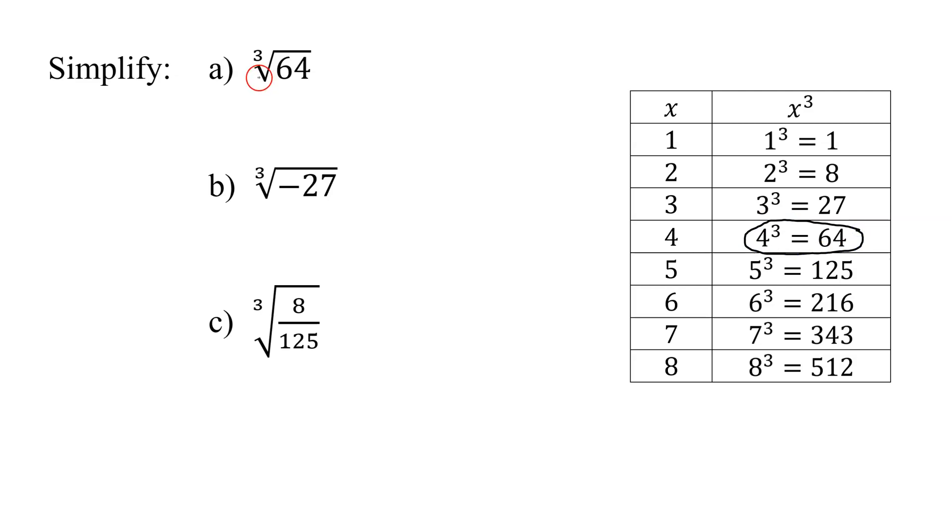So remember, what do I mean by a cube root of 64? 64 is what number multiplied by itself three times gives me 64. And what's the answer? 4. So the cube root of 64 is 4. Double check it. 4 times 4 is 16. 16 times 4 is 64.